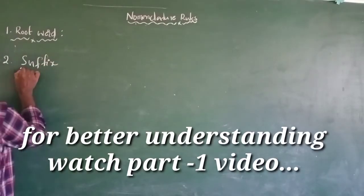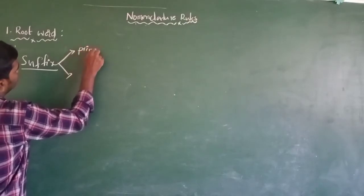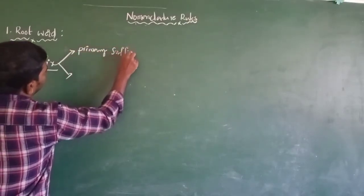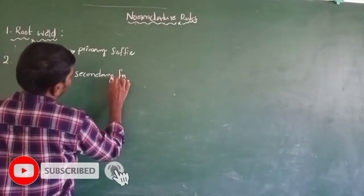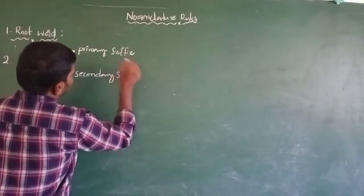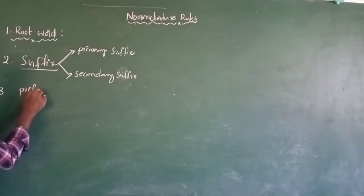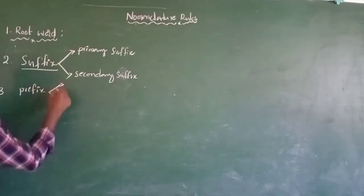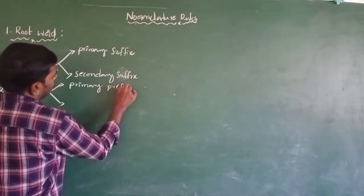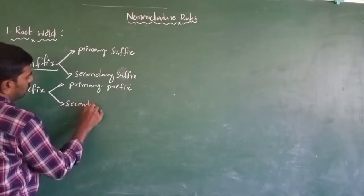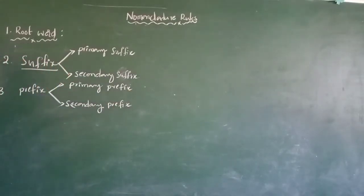The suffix and root word. Using the suffix, suffix is again divided into two types: one is primary suffix, second one is secondary suffix. The third one is prefix. Prefix is also again divided into two types: primary prefix and secondary prefix.